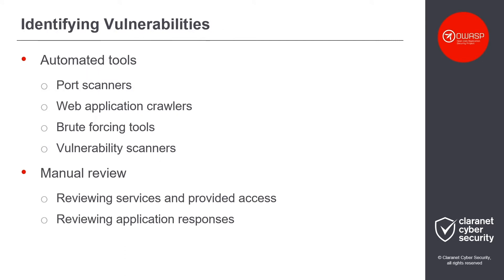The process of finding security misconfigurations follows a standard vulnerability assessment methodology, starting with identifying the attack surface by using system and service discovery tools such as port scanners, then narrowing it down with other tools such as web application crawlers. The identified services are then subject to vulnerability scans and login interfaces are assessed with brute-forcing tools against a list of default or weak credentials. However, often it is difficult for automated tools to determine what is or is not a security misconfiguration, and therefore manual review of services, applications, and the access they provide is required.